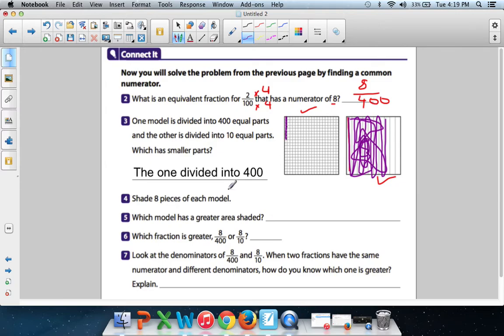Which model has the greater area shaded? Is it the one with this? The one with 8 out of 400? Or 8 out of 100? Because this one right here is 8 out of 400. And this one over here is 8 out of... Well, not 8 out of 100. Sorry. It's 8 out of 10. Sorry. That's what I meant to say. 8 out of 10. So which model has the greater area shaded?